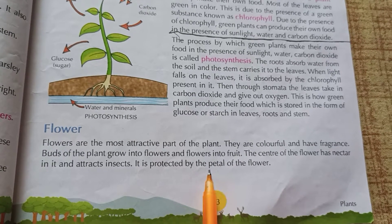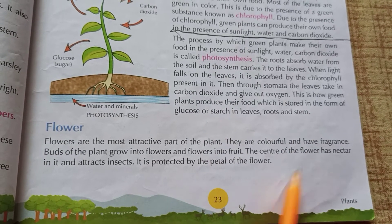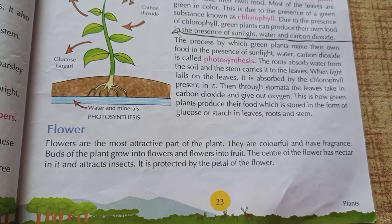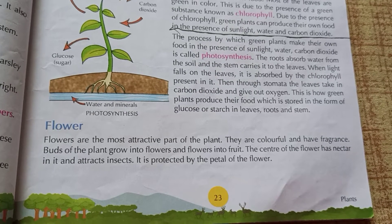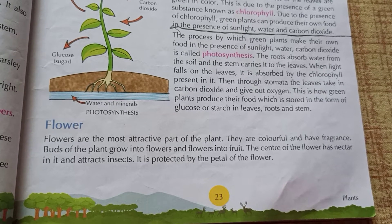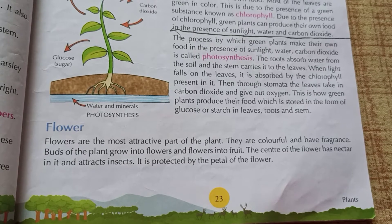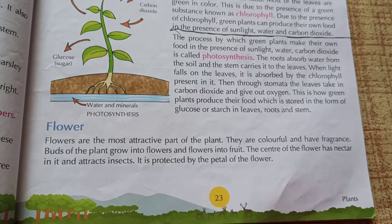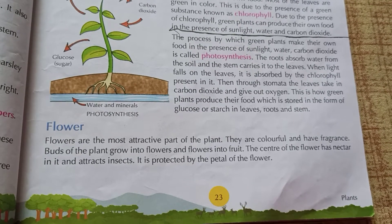From insects and other visitors, pollen passes through the petals. The nectar attracts insects like honeybees. The seeds are in the garden.